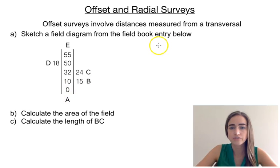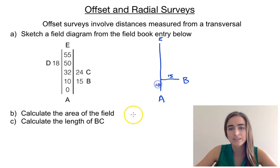So we're going to draw in our transversal A to E. And then we need to draw in our offsets at appropriate distances. So 10 metres up we have an offset coming off to the right that's 15 metres long. So we'll have a line coming off here to B. That line is 15 metres there and that distance it's come up is 10.